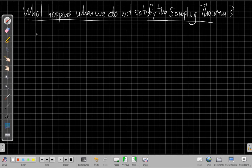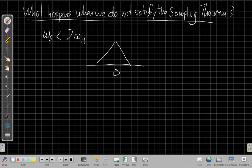So what happens when we do not satisfy the sampling theorem? More precisely, when omega s is less than two times the highest frequency in the signal. Well, again, thinking of the picture, we'd have copies every omega s, but what that means is that omega s is not large enough and these copies start overlapping.